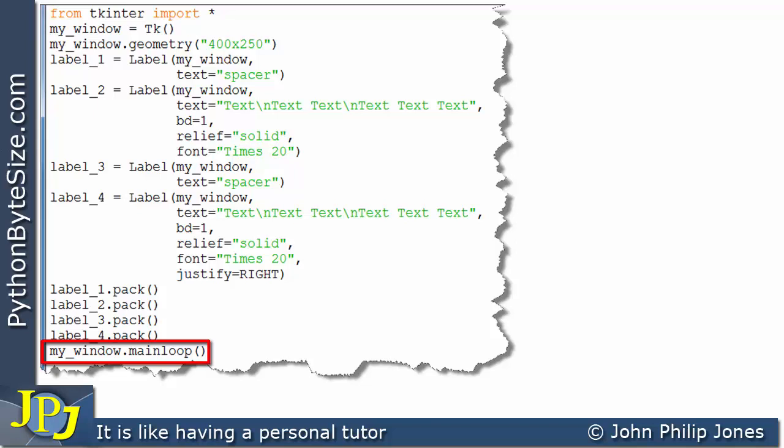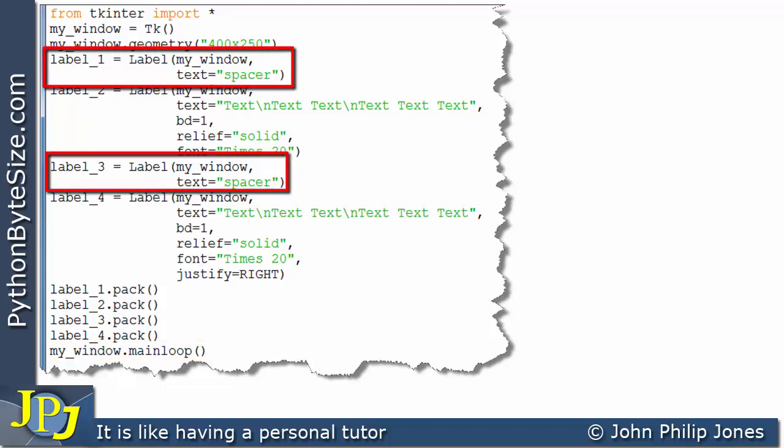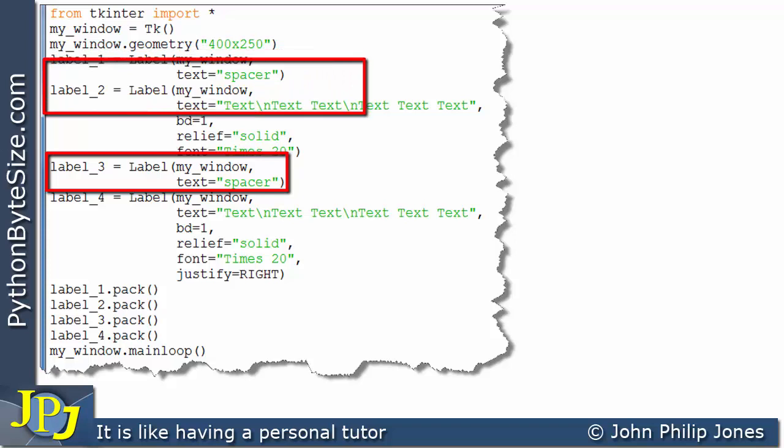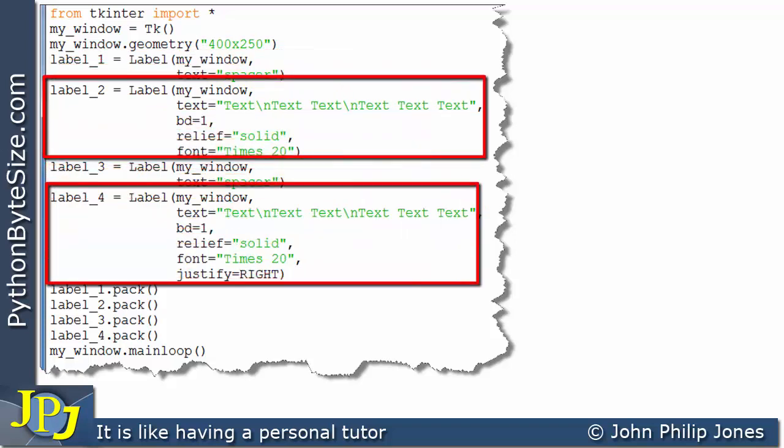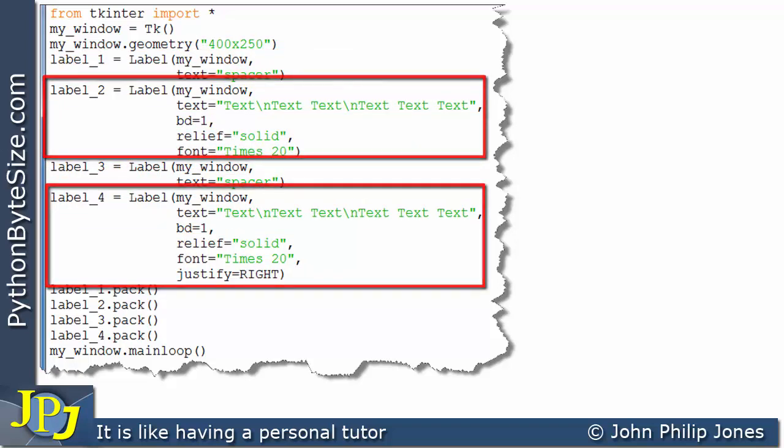If we look at label 1 and label 3, they simply display the text "spacer". They're there so we can clearly see what label 2 and label 4 look like at runtime.